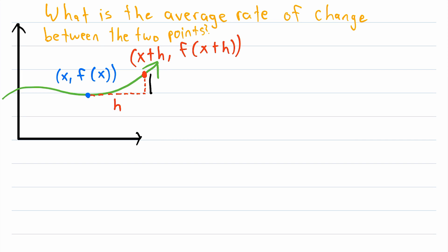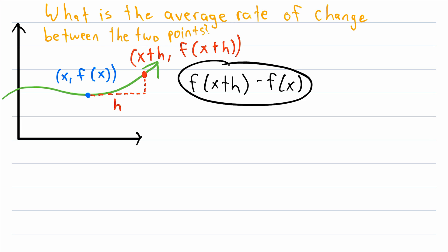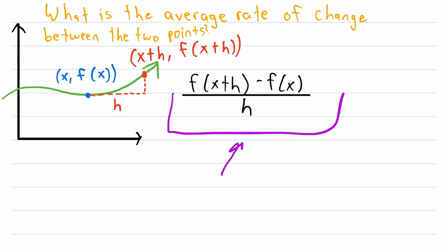First, we need the function's change — that goes in our numerator. Our function started at f of x and ended at f of x plus h. We put the ending value first: f of x plus h minus f of x. This is the change in the function's value. Then we divide by the number of units it took to reach that change. We started at x and ended at x plus h, so the total number of units is x plus h minus x, which is just equal to h. And this, my friends, is the difference quotient.